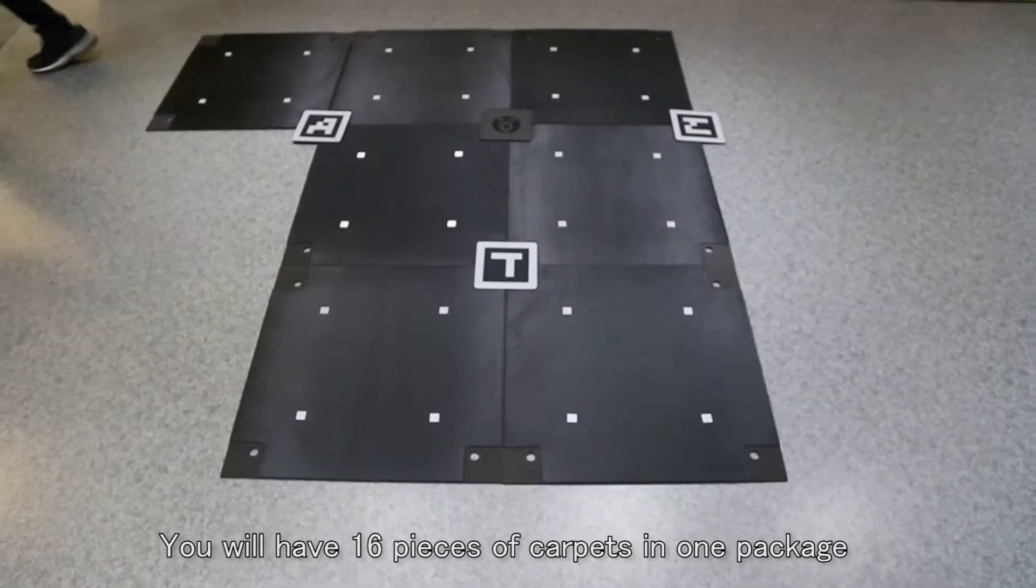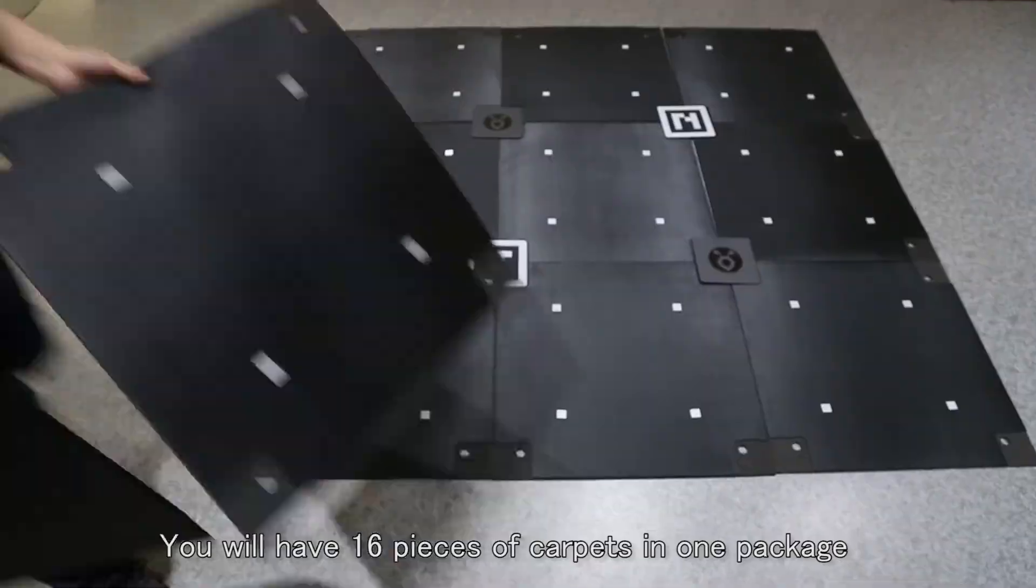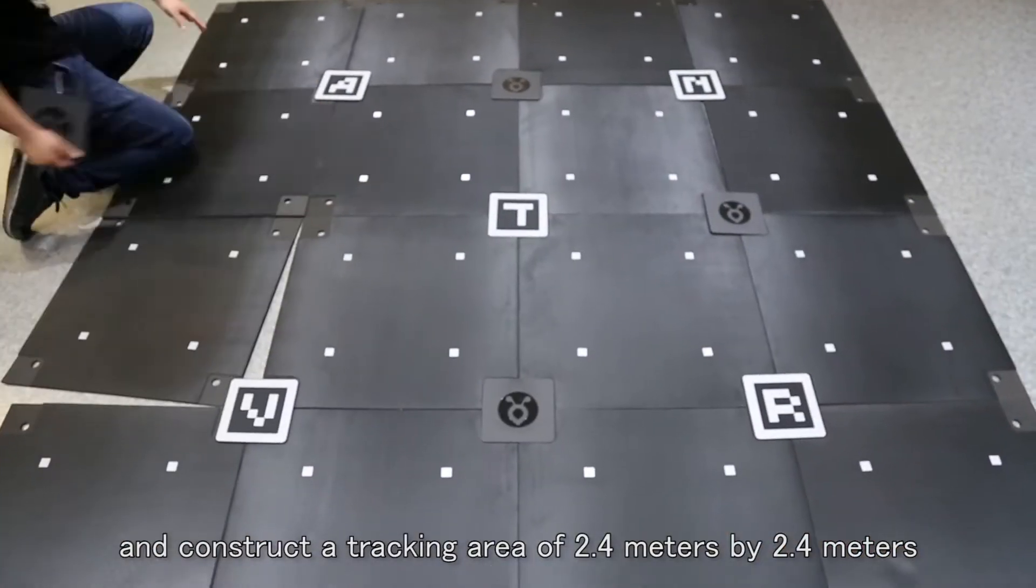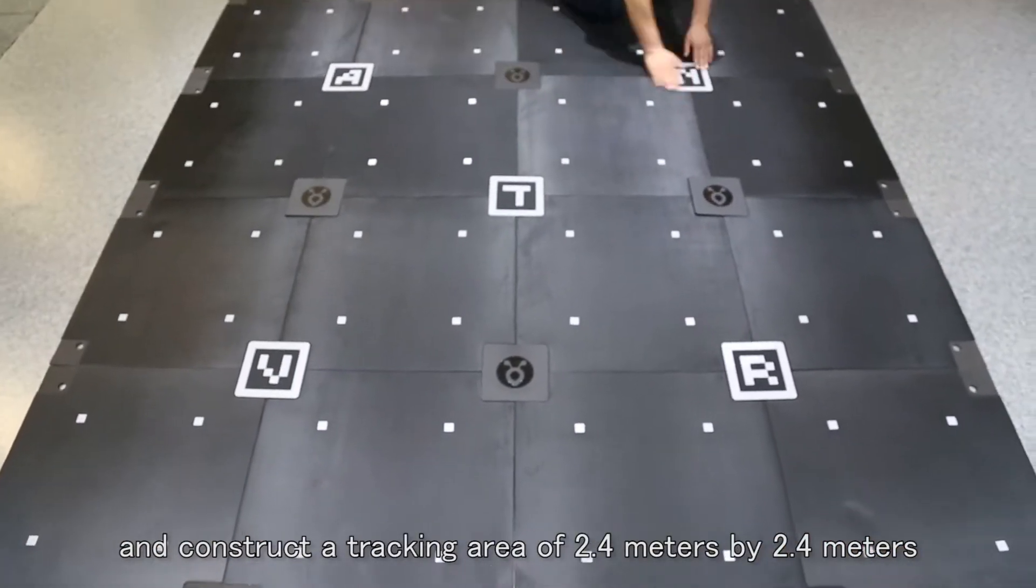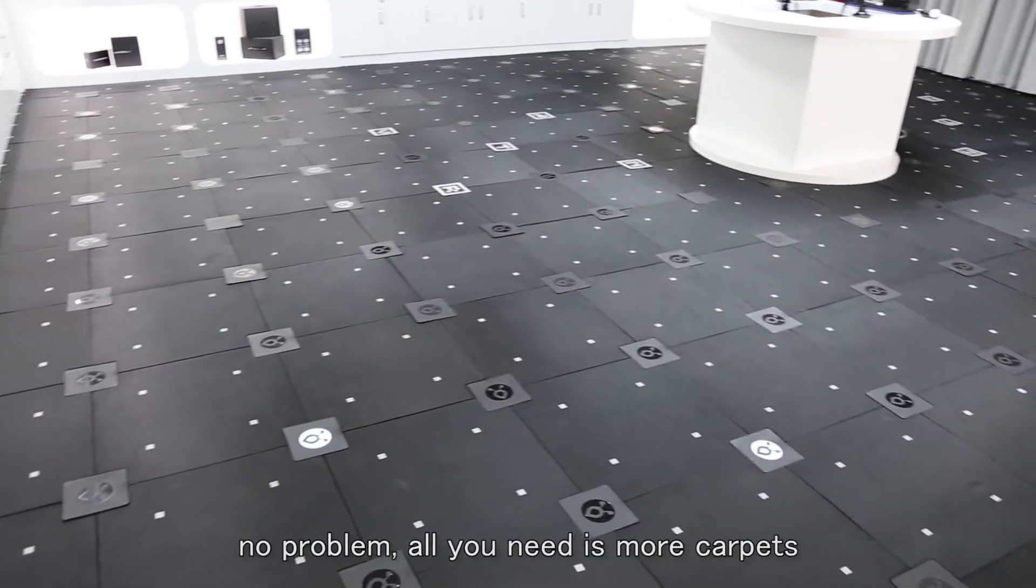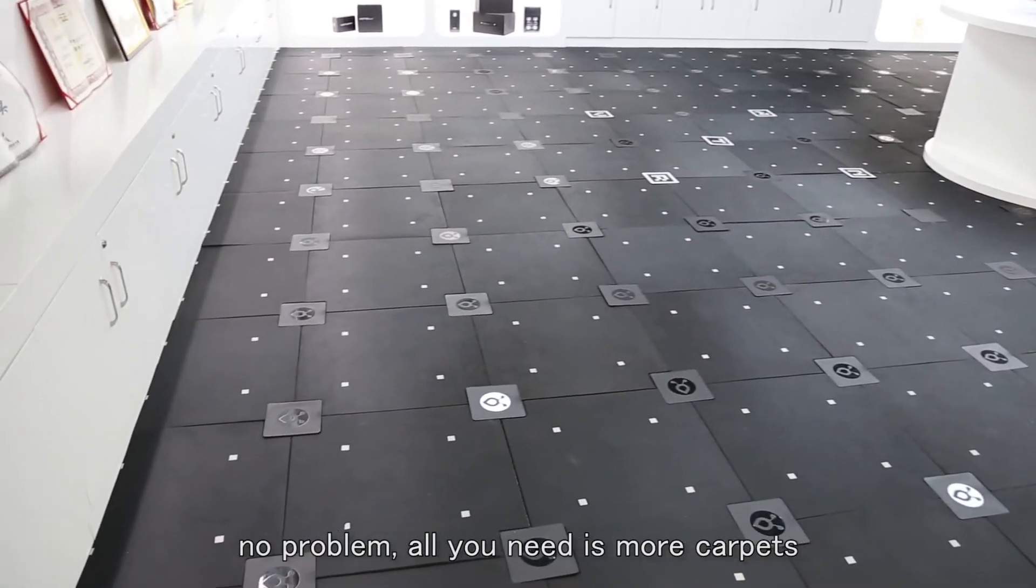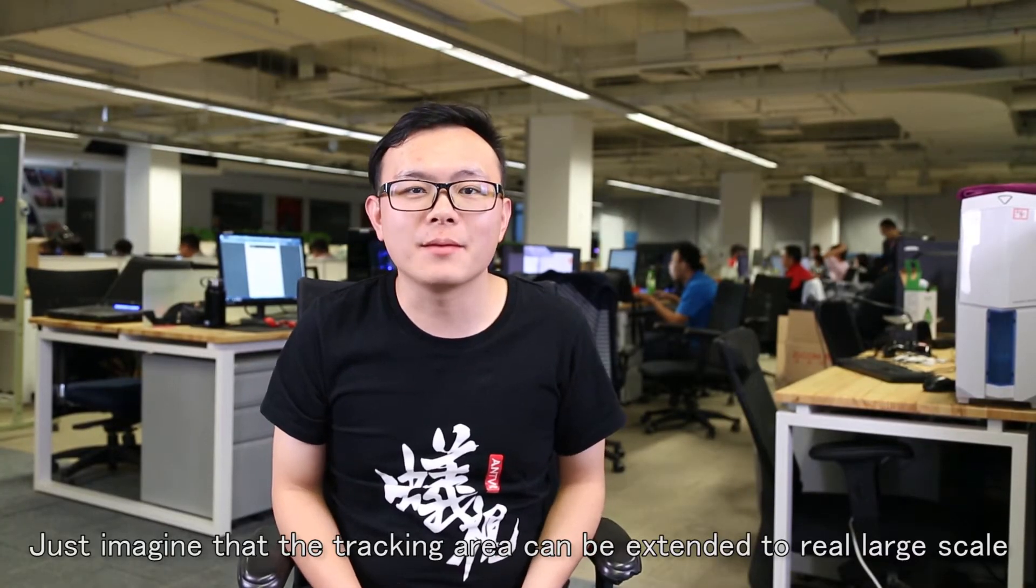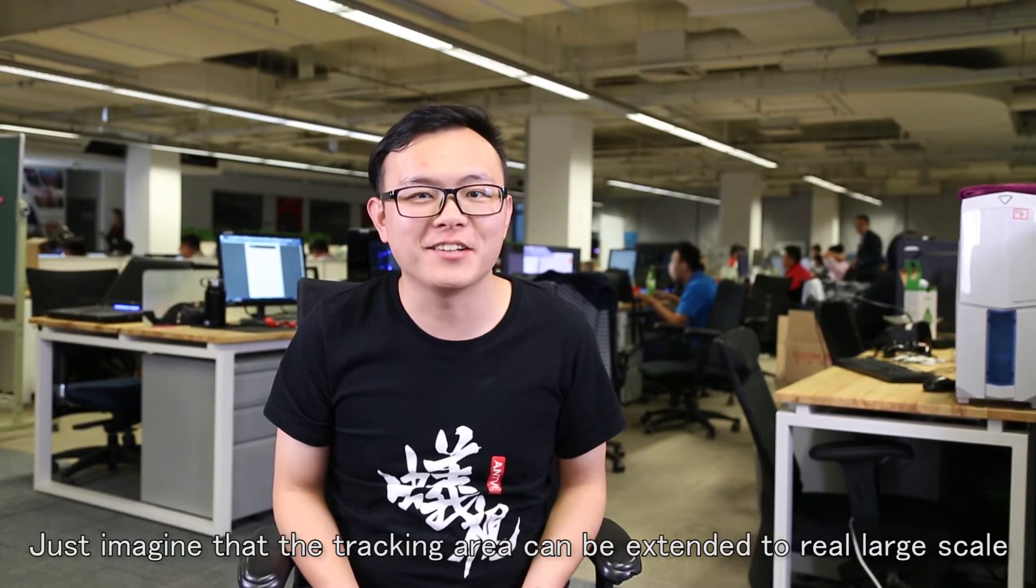You will have 60 pieces of carpets in one package and construct a tracking area of 2.4 meters by 2.4 meters. If you want larger area, no problem. All you need is more carpets. Just imagine that the tracking area can be extended to real large scale.